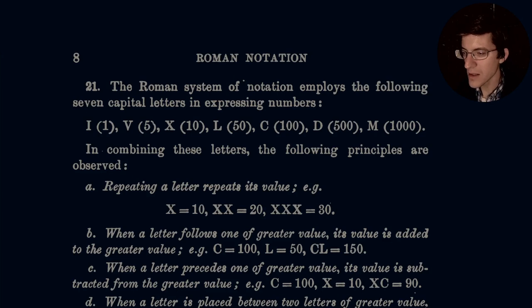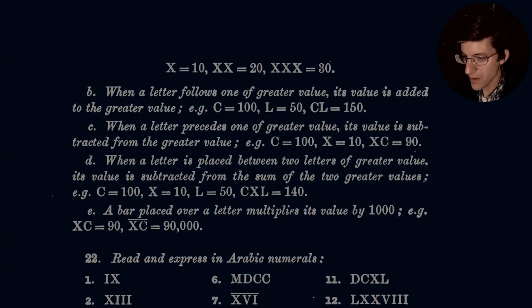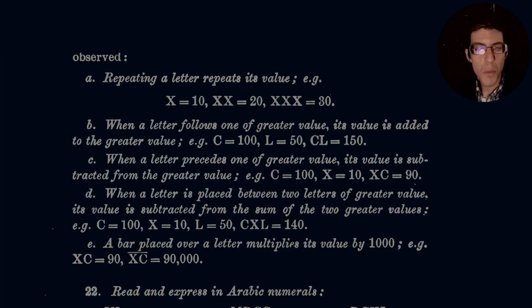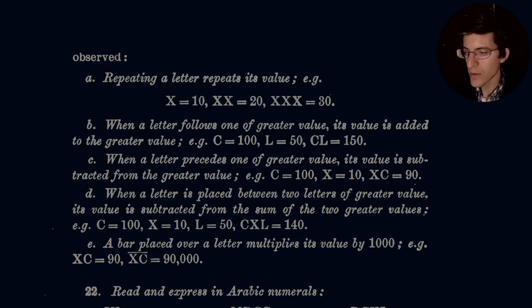In combining these letters, the following principles are observed. Principle A: Repeating a letter repeats its value. So if you have X, that's 10. Two X's is 20. Three X's is 30. When a letter follows one of greater value, its value is added to the following value. So we read these left to right.